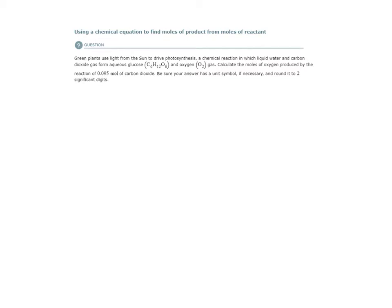So what we need to start is the actual chemical equation. We need that as a starting point. So let's see if we can identify our reactants and products. This reaction is the reaction of photosynthesis. It says a chemical reaction in which liquid water and carbon dioxide gas form aqueous glucose and oxygen gas. There we are.